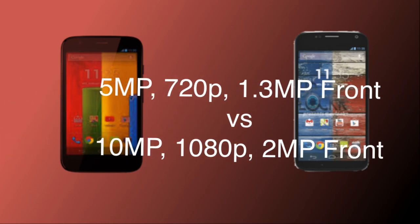Looking at the cameras, the Moto G has a 5 megapixel camera with LED flash, while the Moto X has a 10 megapixel camera with LED flash. For video recording, the Moto X can record 1080p HD video at 60 frames per second, whereas the Moto G can only record 720p HD video at 30 frames per second. The Moto G is lacking in the camera department — even older devices like the Galaxy S2 could record 1080p HD video.